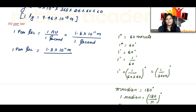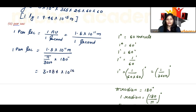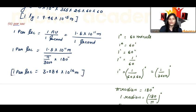So the final result: 1 arc-second is equal to approximately 4.85 into 10 to the power -6 radians, which we have already calculated. This completes the topic of arc-second to radian conversion.